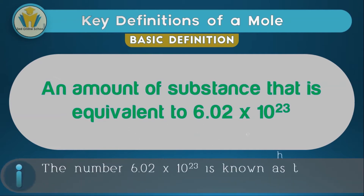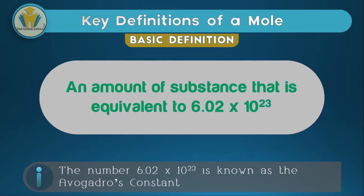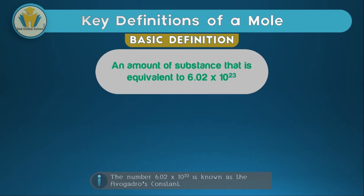For this definition, you should be able to recall that this number, which is 6.02 times 10 to the power 23, is referred to as Avogadro's constant or Avogadro's number. By understanding this definition, you should appreciate that if we were to get any number of particles, as long as they are equal to 6.02 times 10 to the power 23, that number of particles can be referred to as one mole.